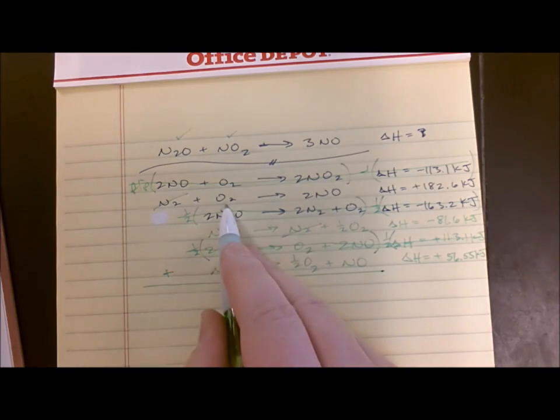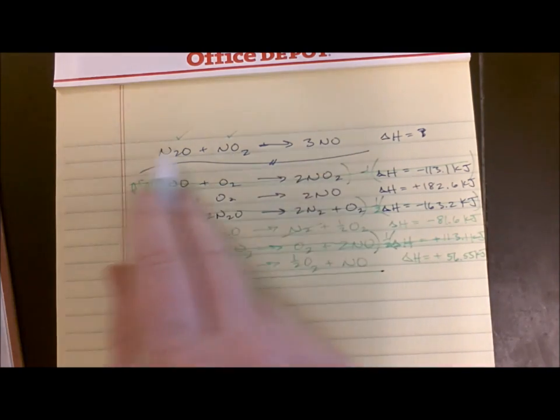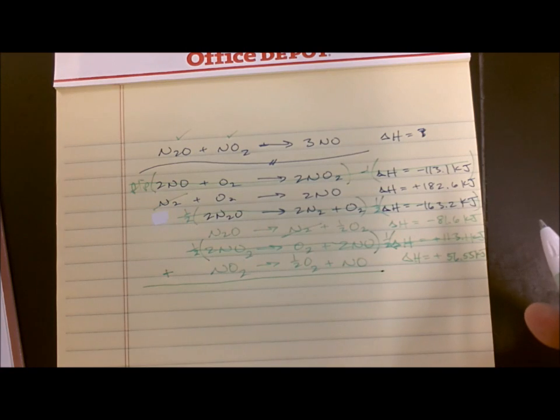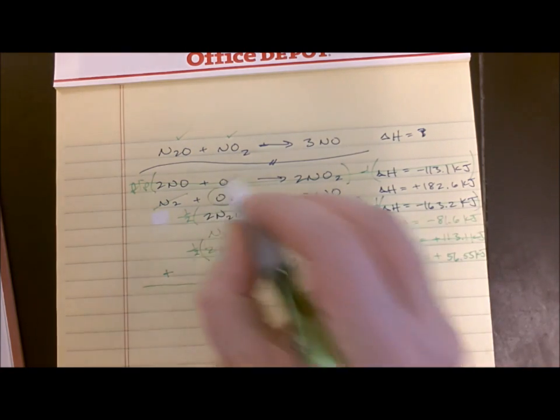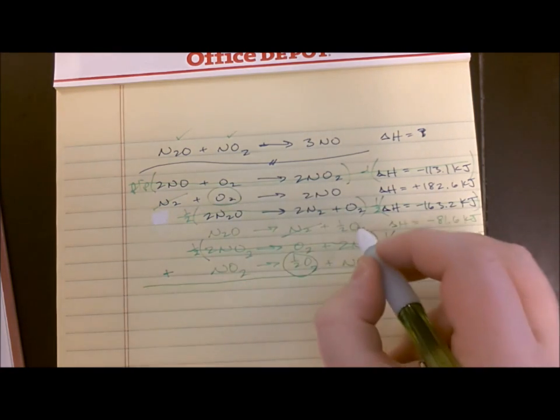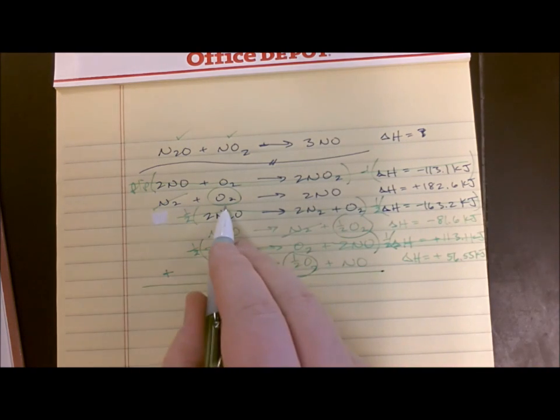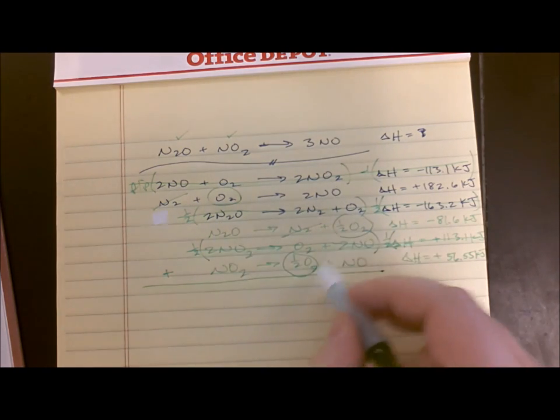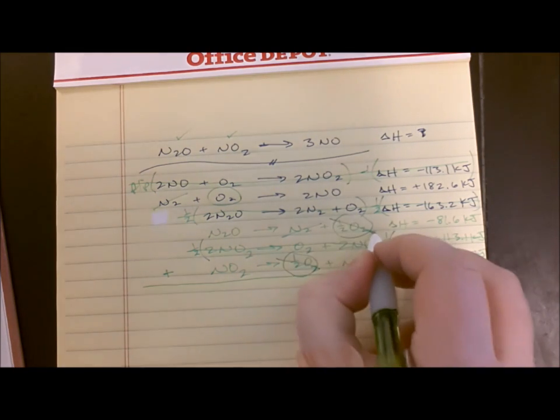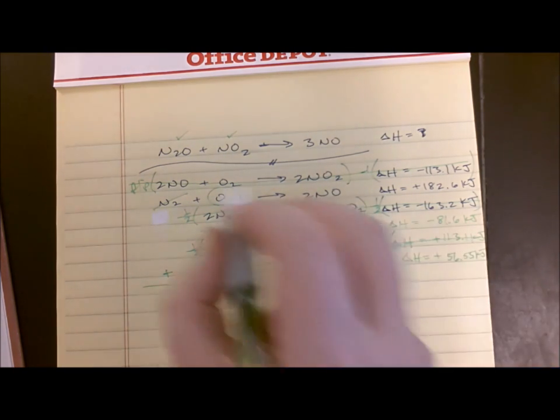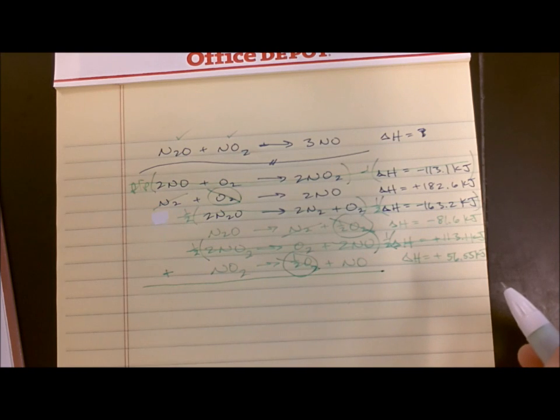I have an O2 here. The O2 doesn't appear in the original equation, so it had better go away. I have an O2 here, I have half of an O2 here and half of an O2 here. The O2 on the left cancels out with the two halves of an O2 on the right. A half of an O2 plus a half of an O2 makes a whole O2, which cancels out with the whole O2 on that side. So net, no O2s.